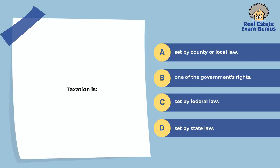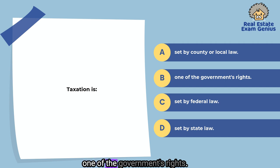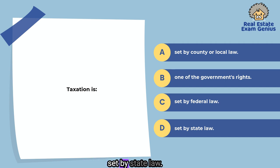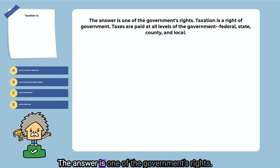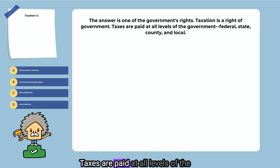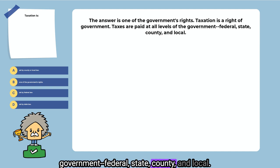Taxation is: set by county or local law, one of the government's rights, set by federal law, or set by state law. The answer is one of the government's rights. Taxation is a right of government. Taxes are paid at all levels of the government — federal, state, county, and local.